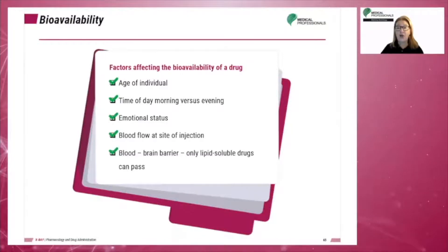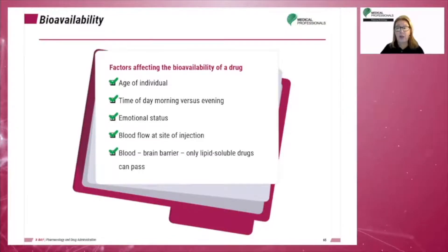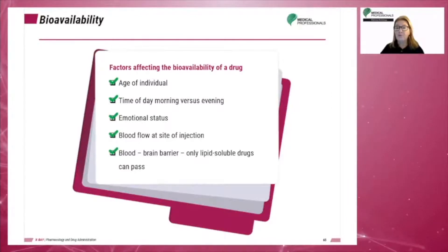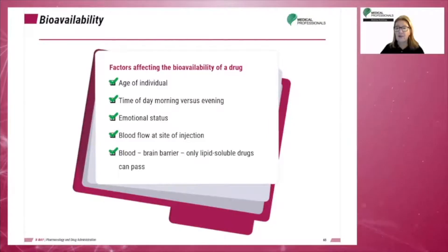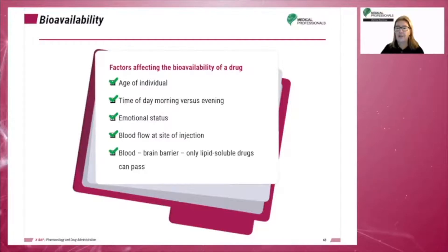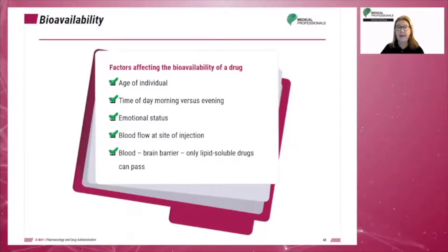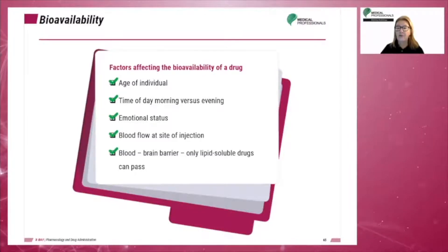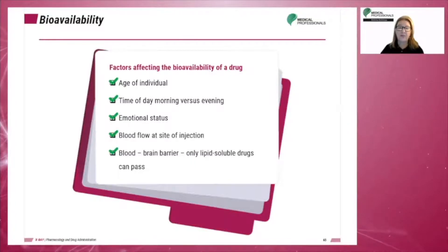Blood flow at the site of injection can affect drug absorption. For example, there is more rapid absorption from the deltoid muscle than from the gluteal muscle. Only lipid-soluble drugs can pass the blood-brain barrier. Therefore, drugs targeting the brain must be specific.